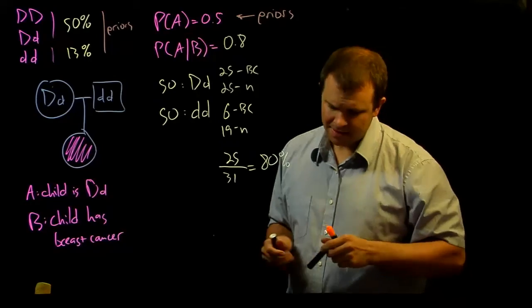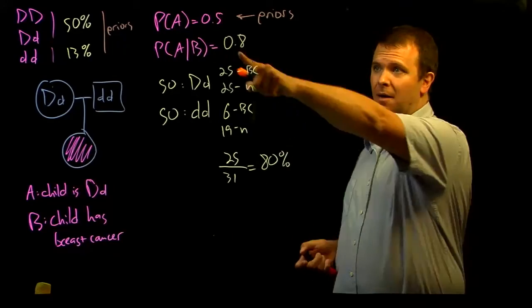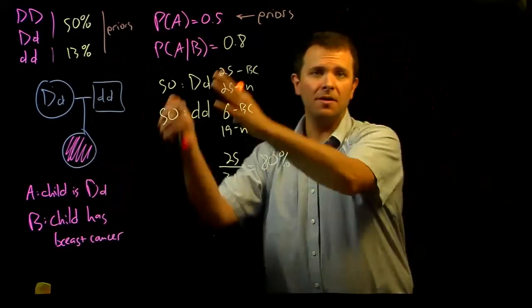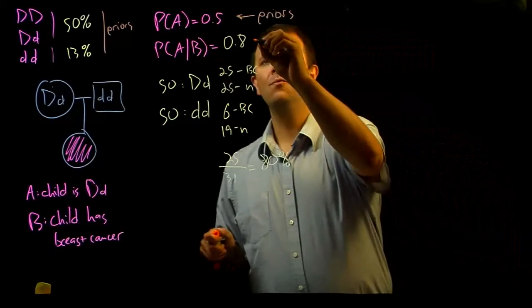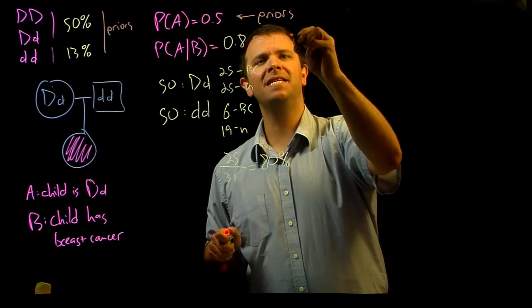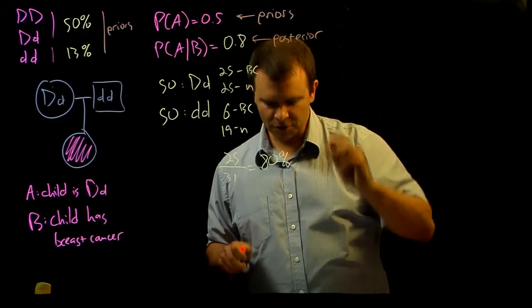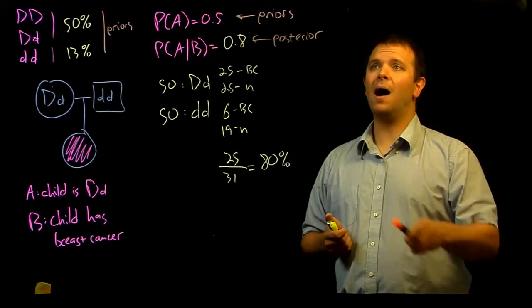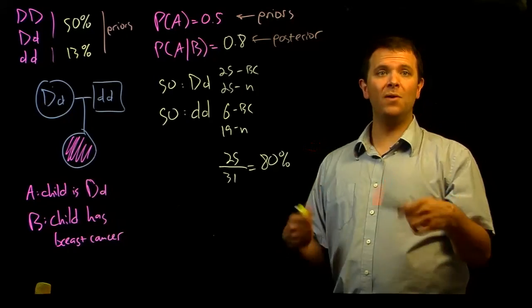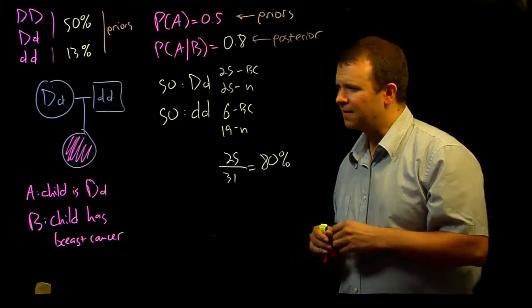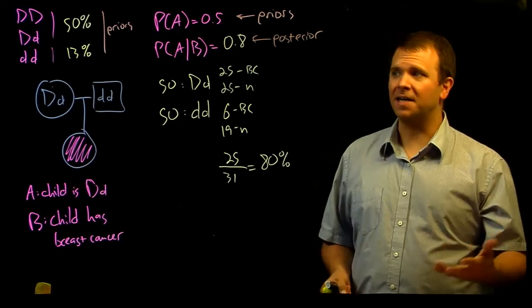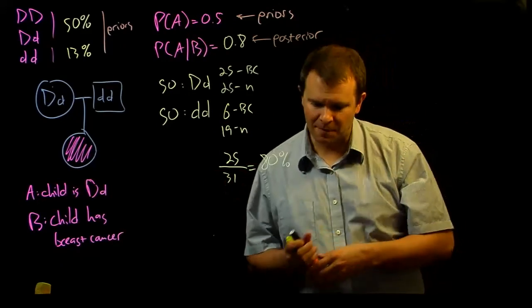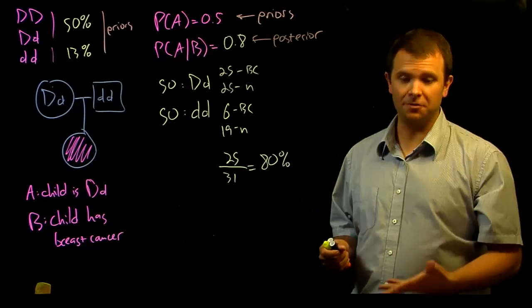And we call the conditional probability that we get once we use all of that information together, we call this a posterior, or a posterior probability. And posteriors are what you get when you update your priors with new information. And so, you can often construct this kind of hypothetical population, like the 100 children.